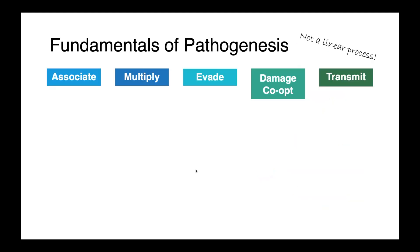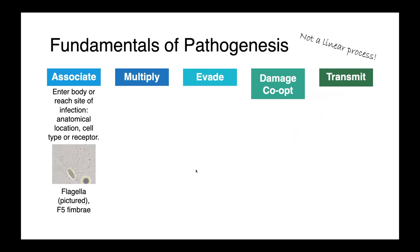What are the steps of pathogenesis? First, the microorganism has to associate — it has to make its way into the body and reach the site of infection. That can either be the animal as a whole, a specific anatomical location, a specific cell type, or a specific receptor. It needs to make its way to the place where it completes its life history. In this image here, you can see a clostridial organism with flagellae — a structure that facilitates motility and allows the bacteria to move towards the site of infection. Other organisms produce fimbriae and attachment factors that allow them to latch on to specific host receptors.